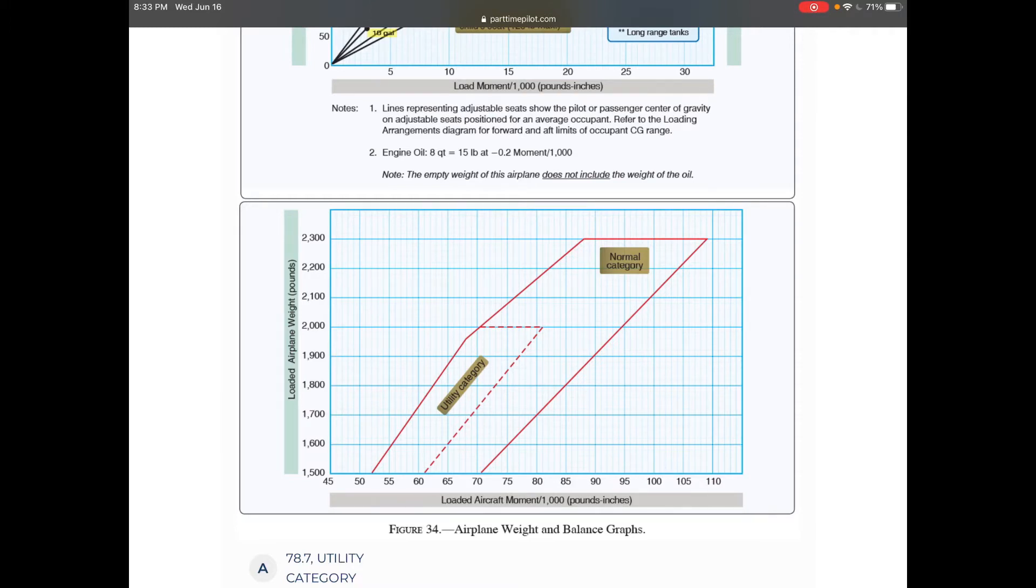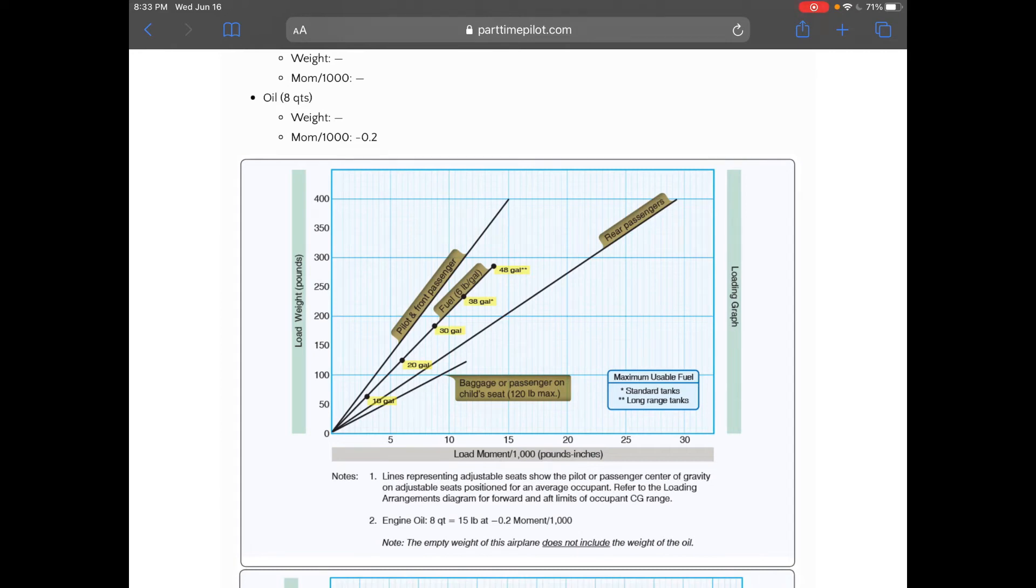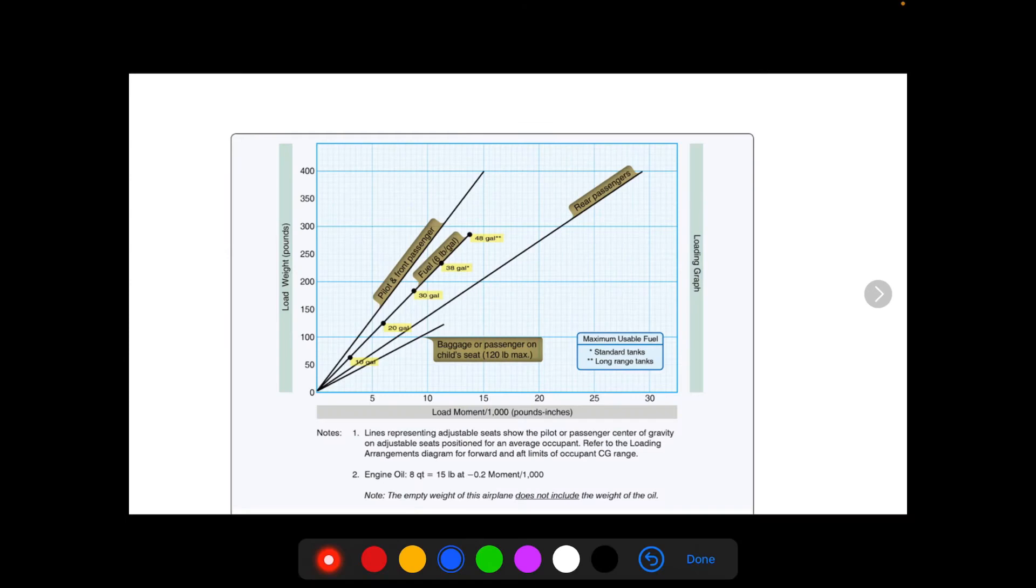But this chart particularly, let's just look at this chart and see how we would go about doing that. So to use this chart, we have all the locations drawn as a line in the aircraft, so we have the pilot in front passenger.